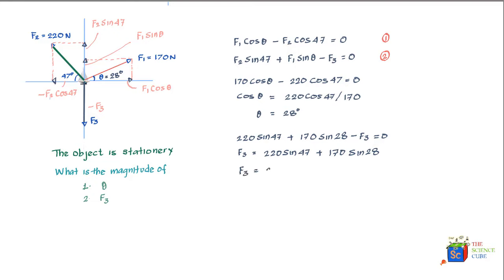What we can conclude is that if the three forces are 170 Newton, 220 Newton, and 240 Newton, and F1 is at an angle of 28 degrees, then the summation of the forces would be zero. If these forces are pulling a boat or any object, the object will remain stationary.